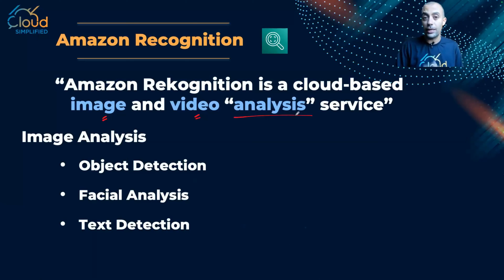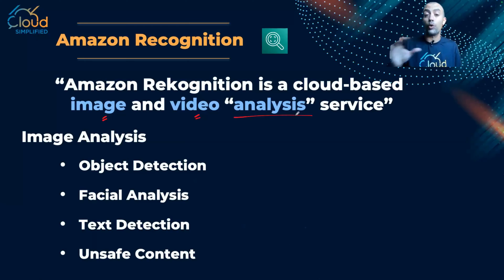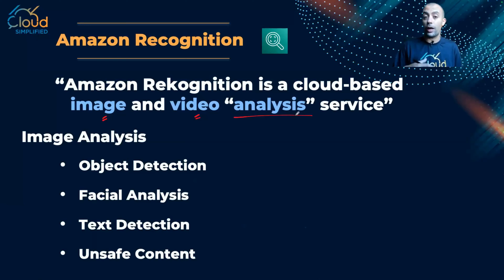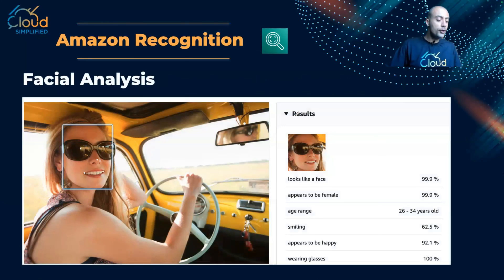Number three is text detection — I can upload a certain image and if it has certain text, Rekognition can help me analyze what kind of text is inside. Finally, a very important use case is unsafe or inappropriate content detection. For example, if I have a website where users are uploading images and I want to deny inappropriate uploads, Rekognition is the service that can help me do so.